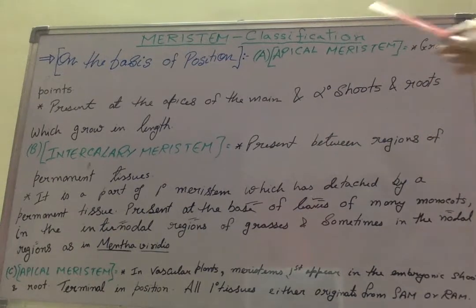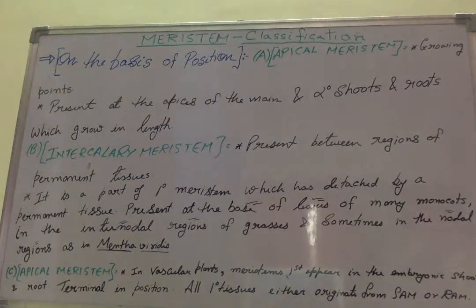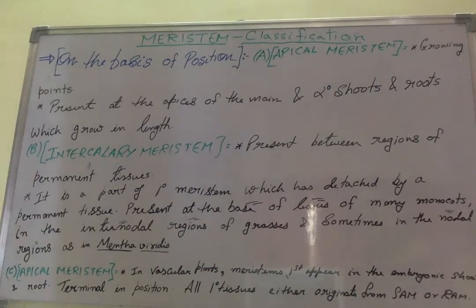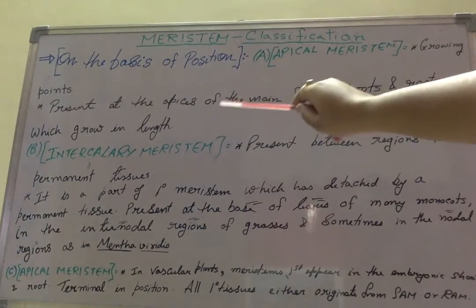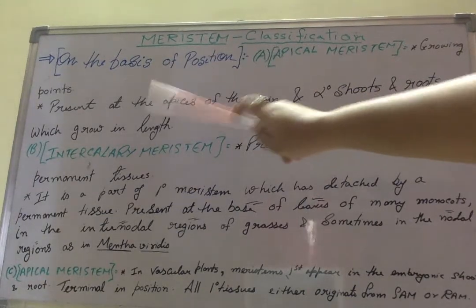Apical meristem is found in growing points — those points in the plant body which show rapid growth, where cells are undergoing rapid growth. Apical meristem is found at the apices of the main and secondary shoots and roots.